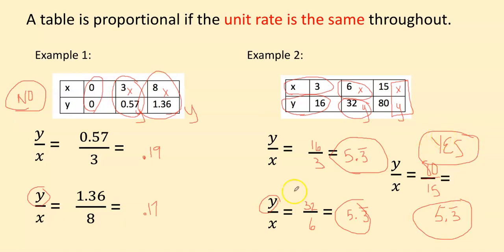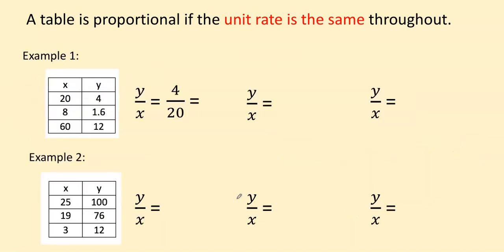All right, I have two more examples for you. Okay, a table is proportional if the unit rate is the same throughout. Okay, so, oops, I accidentally already filled that in. Let me grab a pen.